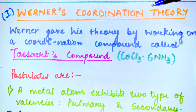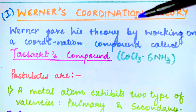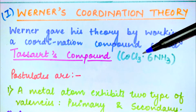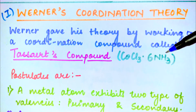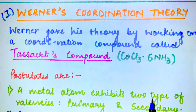Werner's Coordination Theory. As the name suggests, the theory is given by Werner. Werner gave his theory by working on a coordination compound which is called Tessert's compound, i.e. CoCl₃·6NH₃. The postulates of this theory are: (1) A metal atom exhibits two types of valencies, i.e. primary valency and secondary valency.